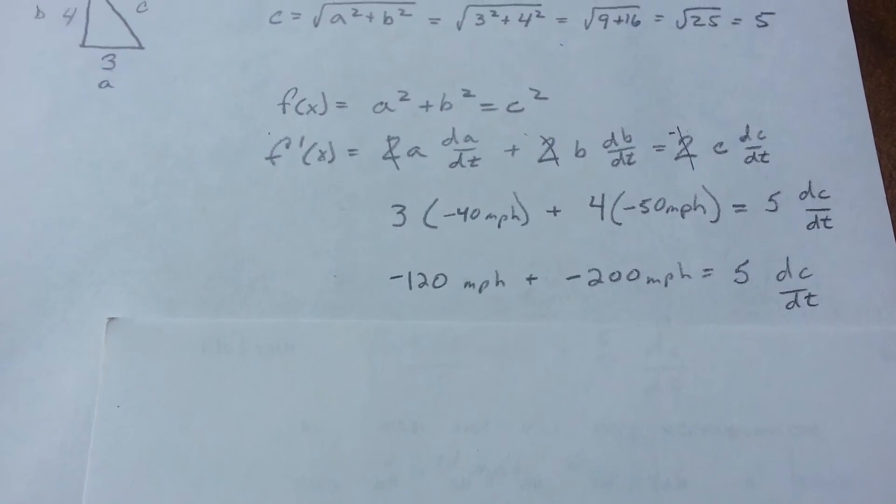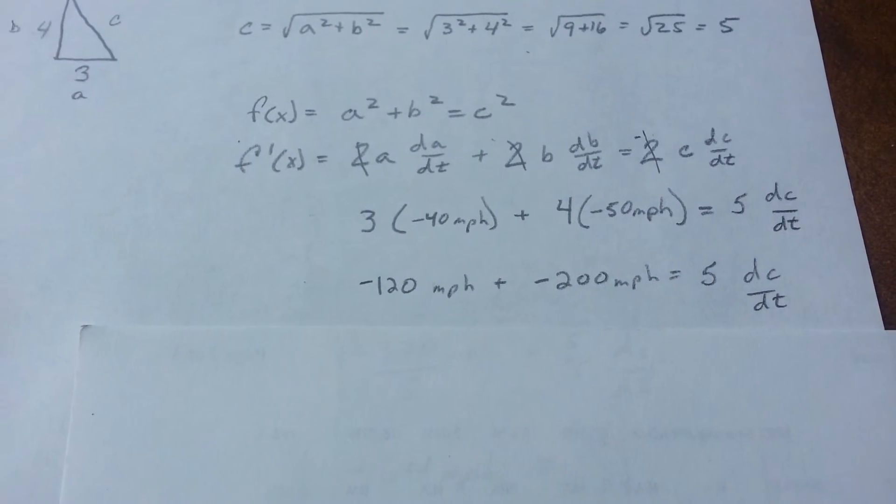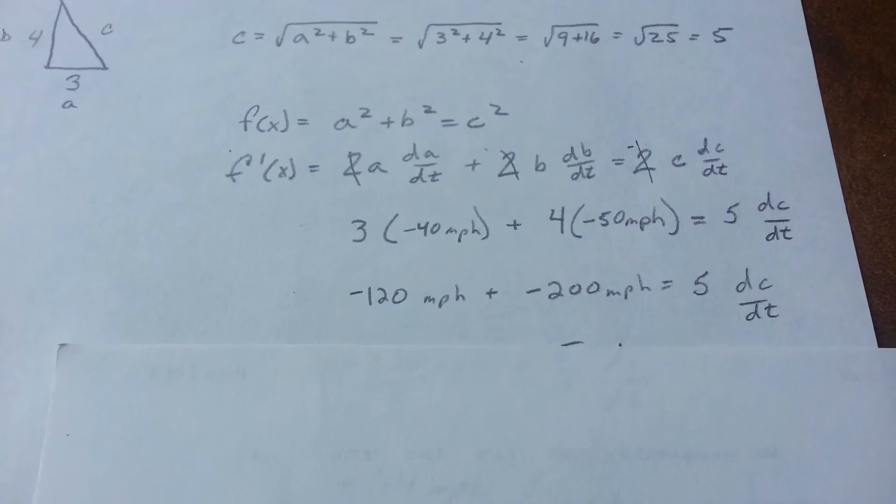Coming up with the numbers, we have negative 120 miles an hour plus negative 200 miles an hour going towards the intersection equals 5 dC over dt.